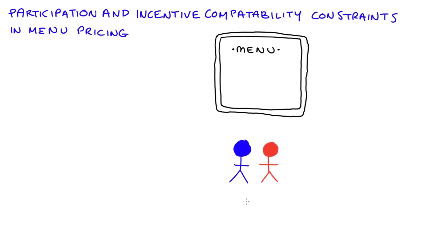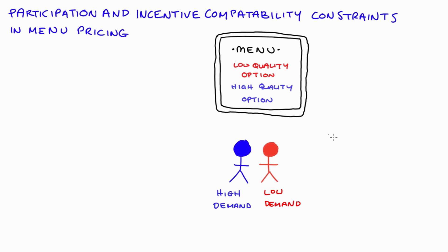As an example for this video, we just have two different types of consumer: a high demand consumer and a low demand consumer. Our menu can have two options then — one low quality option designed for our low demand consumer, which will be a cheap option, and one high quality option designed for the high demand consumer, which will be a more expensive option. The problem is how we're going to price these options such that the high demand consumer really does choose the high quality option and the low demand consumer really does choose the low quality option.